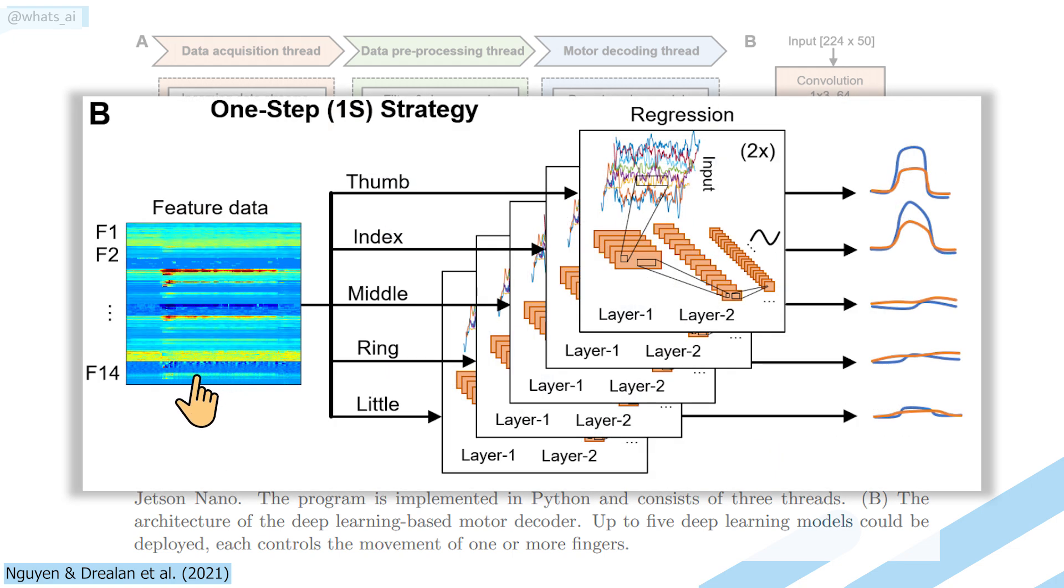Then, this processed data is sent into the deep learning model to have a final output controlling each finger's movement. Note that there are five outputs, one for each finger.